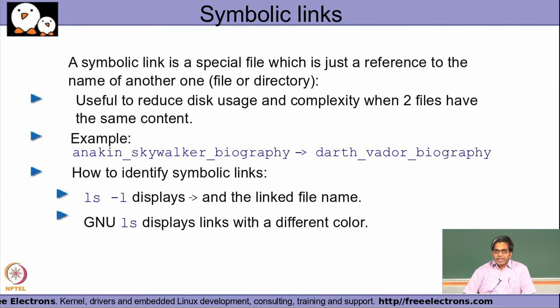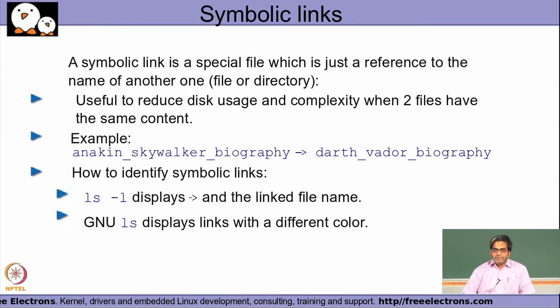The embedded location means the file is available deep in the file system and you don't want to navigate through all those subdirectory levels to access it. Likewise, a link in Linux behaves the same way. A symbolic link is a special file that is just a reference to the name of another file or directory, used to reduce disk space and complexity when two files have the same content.